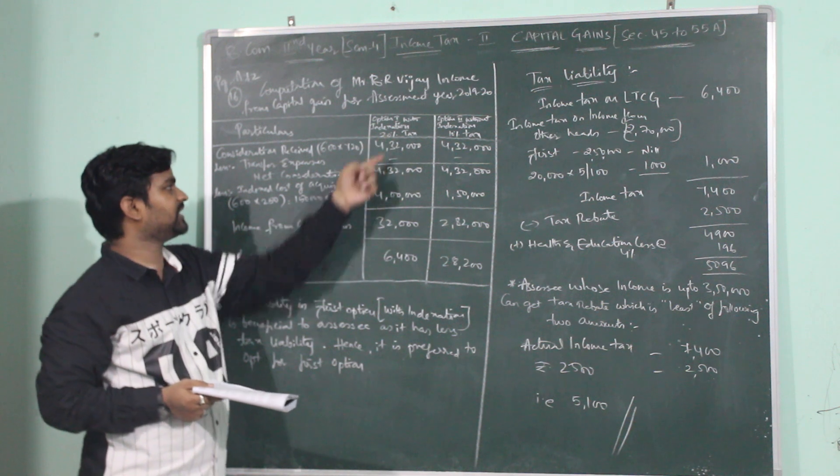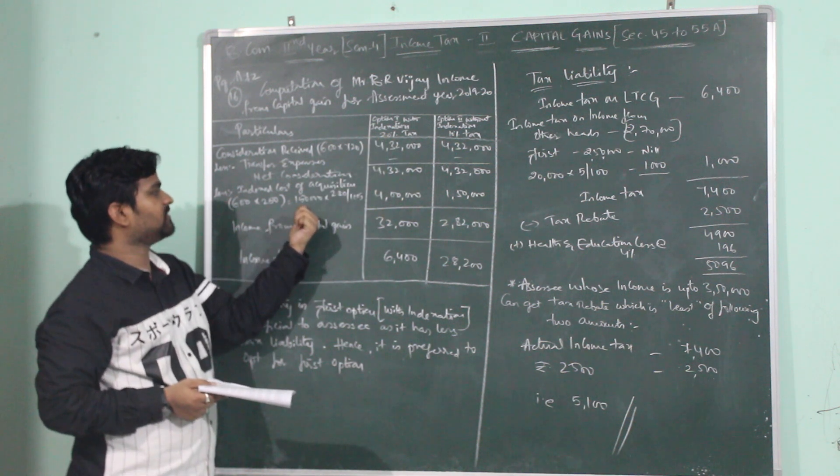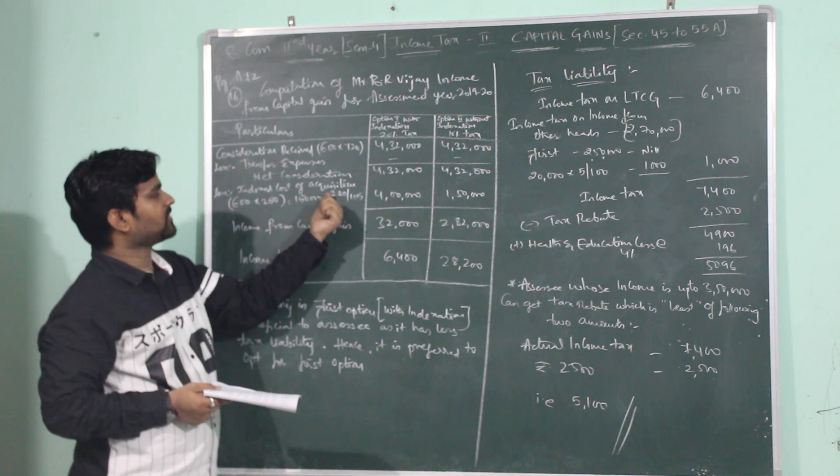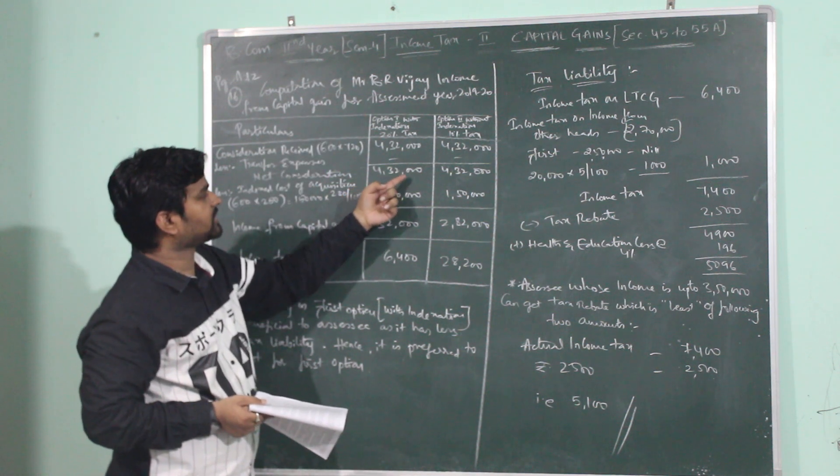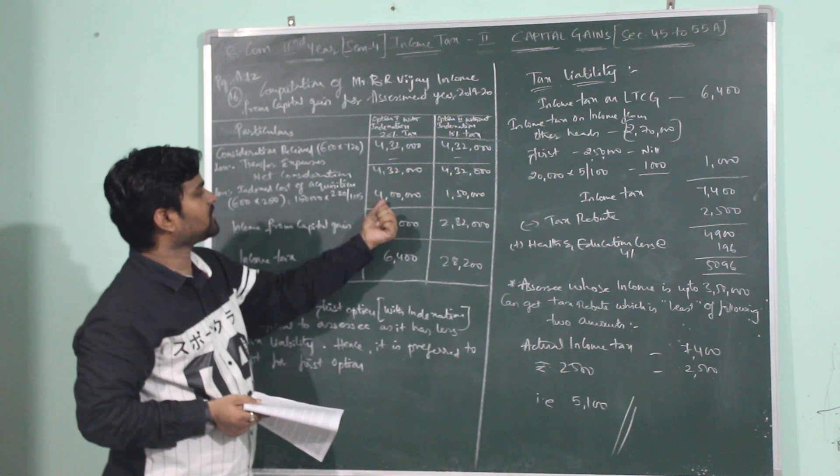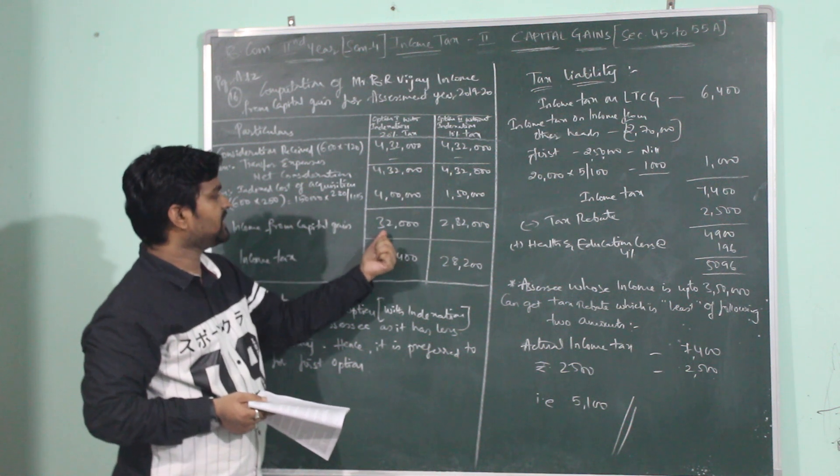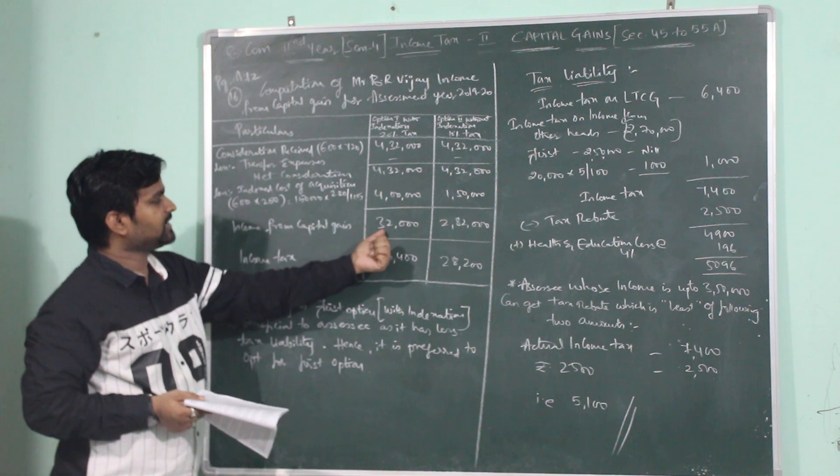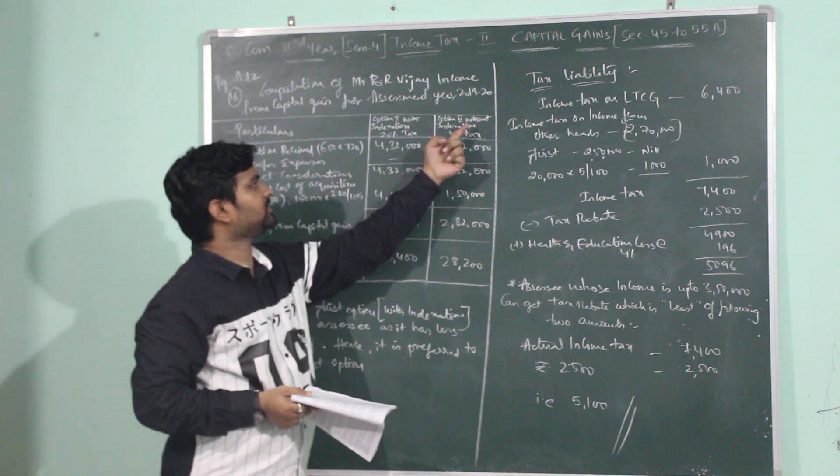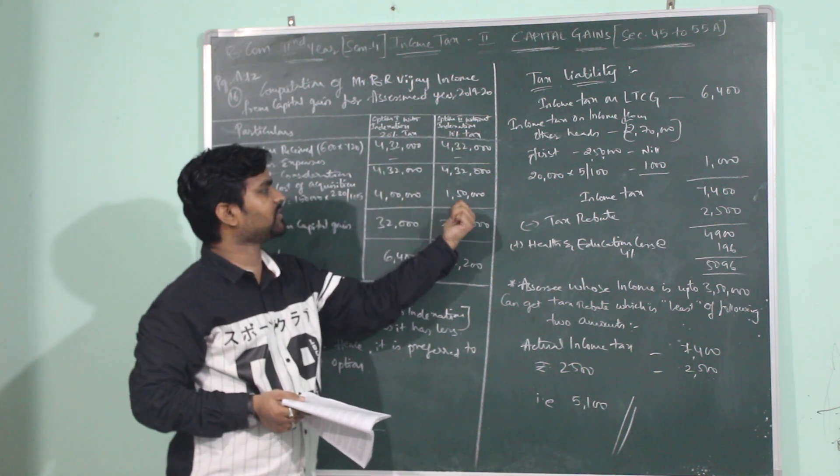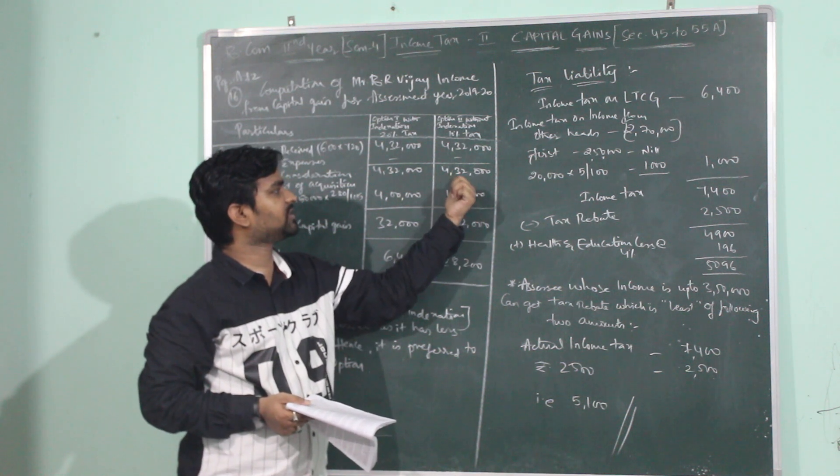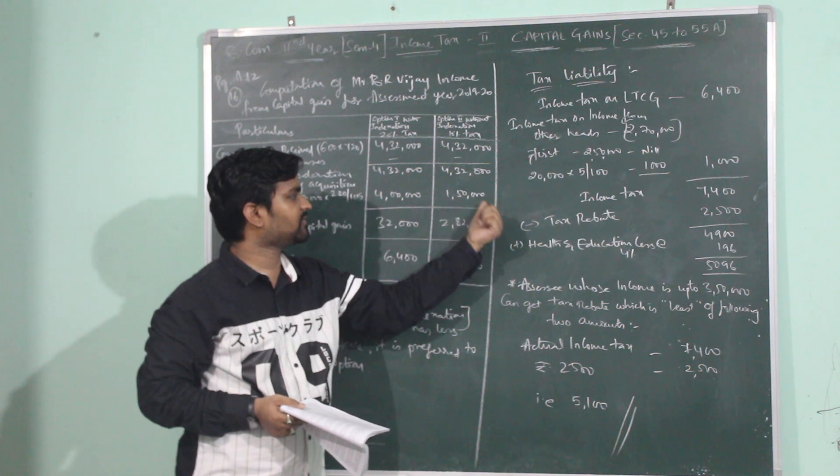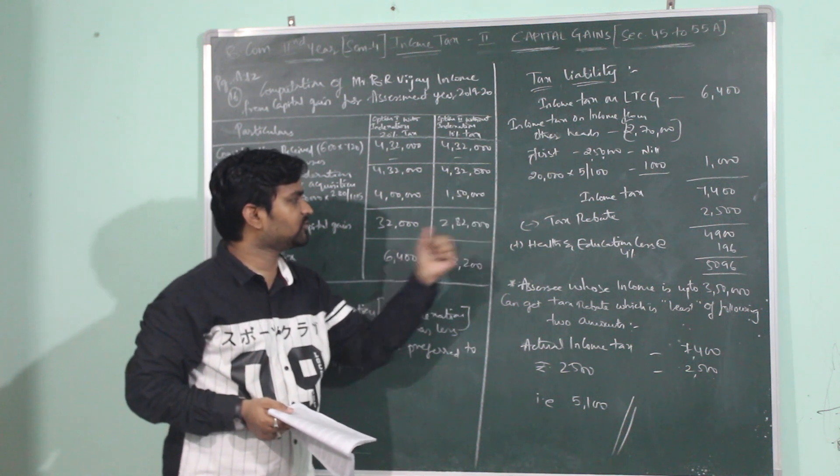This option is with indexation, so the cost of acquisition will be converted into indexed cost of acquisition which is 4,00,000. Option 1: Net consideration is 4,32,000, indexed cost of acquisition is 4,00,000, then income from capital gain will be 32,000. Option 2: Without indexation, cost of acquisition is 1,50,000 subtracted from net consideration 4,32,000, which is 2,82,000.